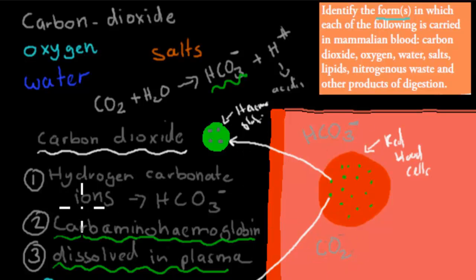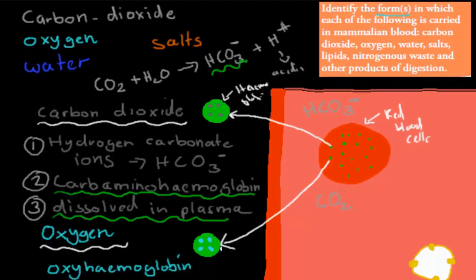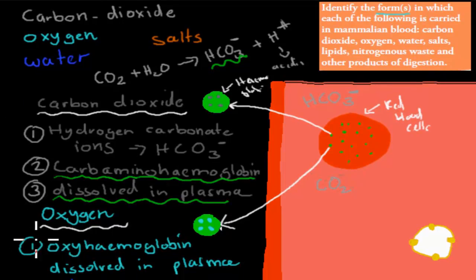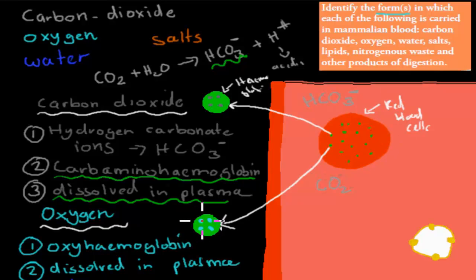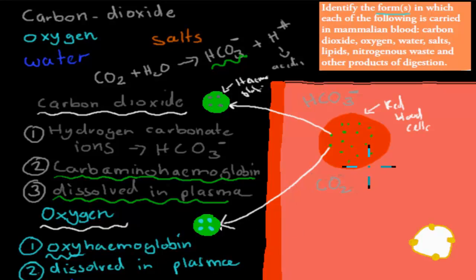So the three forms for carbon dioxide are: hydrogen carbonate ions (HCO3−), carbaminohemoglobin, or dissolved in plasma. For oxygen, there are two ways. First, it travels as oxyhemoglobin — oxygen attached to hemoglobin inside red blood cells. Second, and less likely, is dissolved in plasma as O2 molecules.